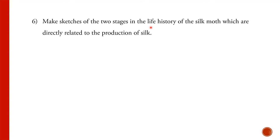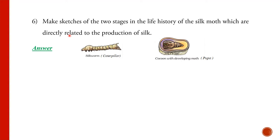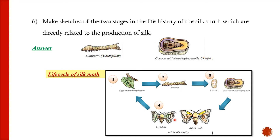Make sketches of the two stages in the life history of the silk moth directly related to the production of silk. The two stages related to silk production are the caterpillar stage (the silkworm stage) and the pupa stage — when the silk moth is covered with the cocoon.